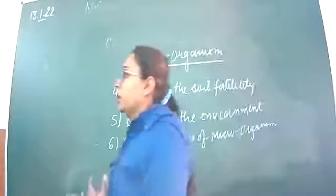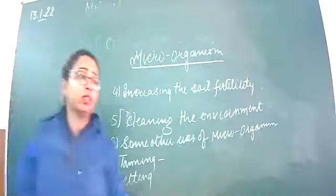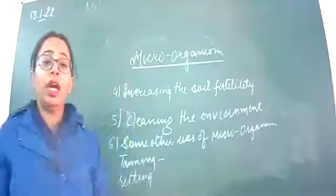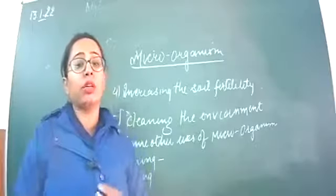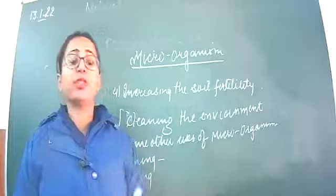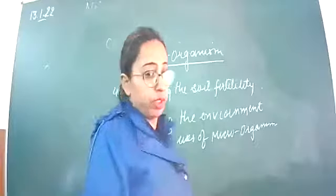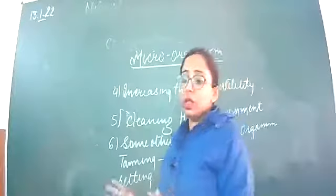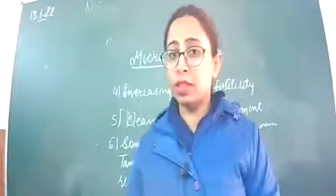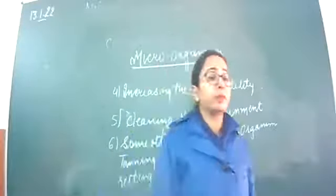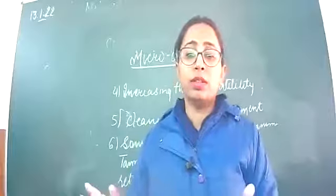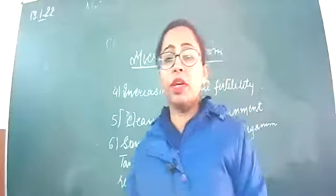In tanning, bacteria are used to harden the skin of animals to form leather. In retting, bacteria are used to separate out jute fibers. So these are the various ways in which microorganisms can be used: in the medicinal industry, commercially, in food items, in soil fertility, in cleaning the environment, and in other uses like tanning and retting.